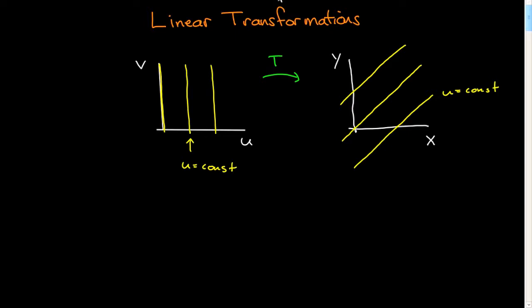Then likewise, there'll be curves in which v is equal to a constant and u varies, and they'll correspond to some different set of curves over here. Again, they will depend on the transformation. So these are curves v is equal to a constant.